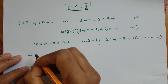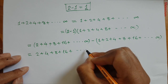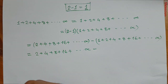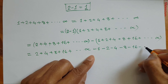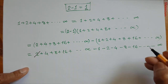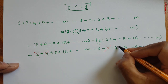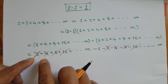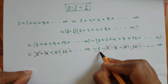Now I'm going to open this bracket. Writing it out: 2 plus 4 plus 8 plus 16 plus dot dot dot to infinity. And since there's a minus in front of the bracket, all signs will be converted — plus becomes minus — giving: minus 1 minus 2 minus 4 minus 8 minus 16 minus dot dot dot to infinity. Now look: this plus 2 and that minus 2 cancel each other. This plus 4 and minus 4 cancel. Plus 8 and minus 8 cancel. Plus 16 and minus 16 cancel. The entire remaining series cancels, and only minus 1 is left.